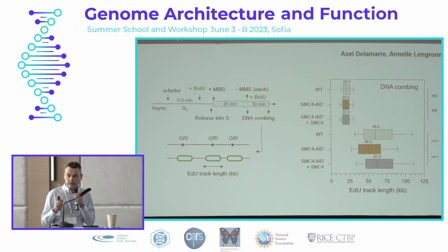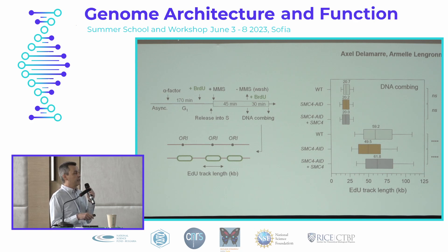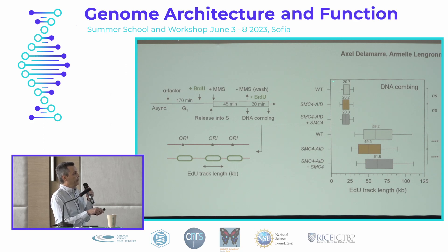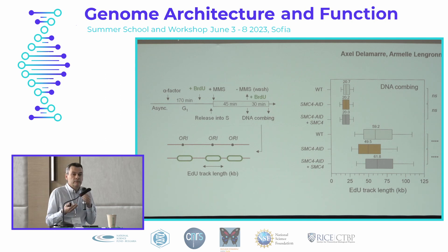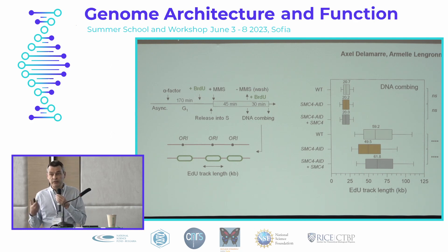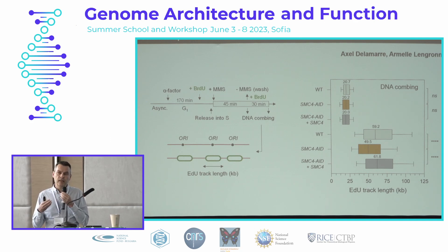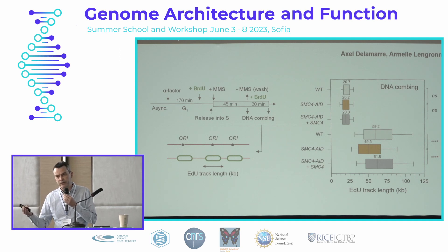To look more directly at replication, he used DNA fiber combing to label ongoing replication. Upon MMS exposure, forks are arrested — tracks are about 20 kb long with no difference between control and SMC4-depleted cells. But when cells are released from arrest, there is a very significant delay with shorter tracks, meaning a delay in fork restart. This could be fully rescued by re-expressing wild-type SMC4. The problem in yeast is there is only one condensin, it's essential, and it's very difficult to separate S phase-specific function from what happens later in G2 and mitosis. So we decided to switch to human cells.